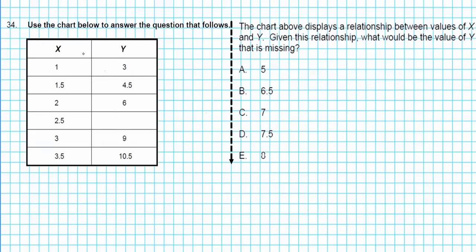Let's take a look at question 34. It reads, use the chart below to answer the question that follows. So we have the chart right here. The chart above displays a relationship between x and y. Given this relationship, what would be the value of y that is missing?